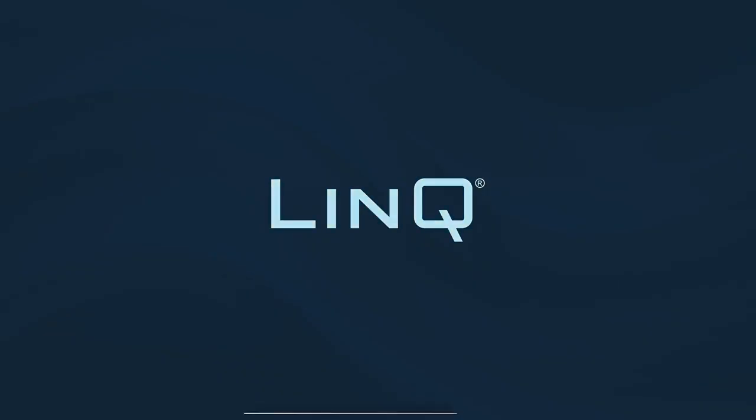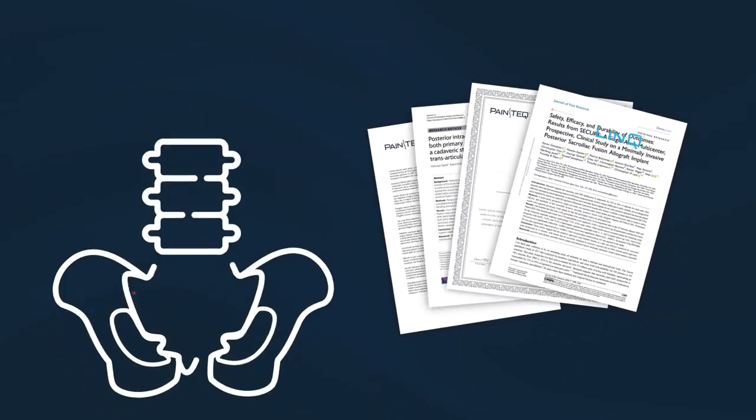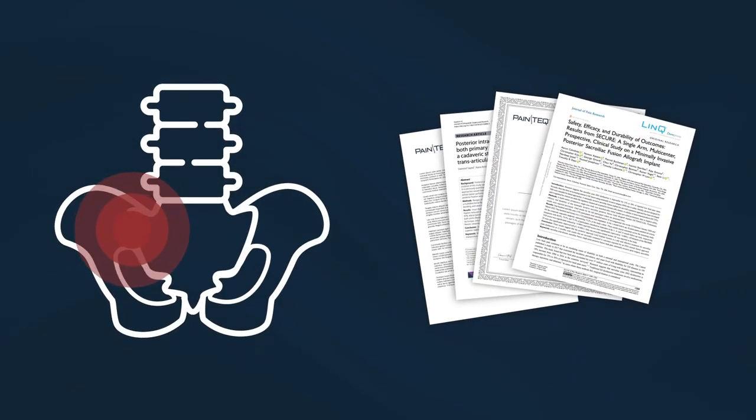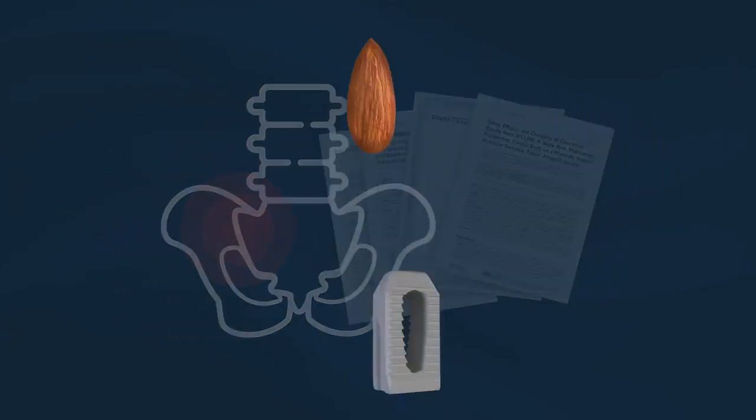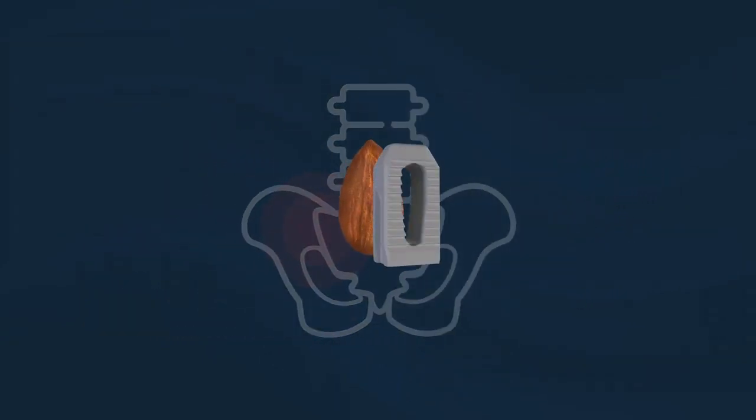Link is a simple and clinically proven outpatient procedure to reduce or eliminate chronic sacroiliac joint pain. The implant is natural bone, roughly the size of an almond.